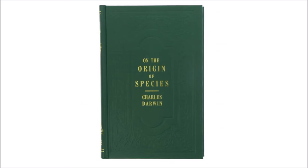See how different the leaves of the cabbage are, and how extremely alike the flowers; how unlike the flowers of the heartsease are, and how alike the leaves; how much the fruit of the different kinds of gooseberries differ in size, color, shape, and hairiness, and yet the flowers present very slight differences. It is not that the varieties which differ largely in some one point do not differ at all in other points — this is hardly ever, perhaps never, the case. The laws of correlation of growth, the importance of which should never be overlooked, will ensure some differences; but, as a general rule, I cannot doubt that the continued selection of slight variations, either in the leaves, the flowers, or the fruit, will produce races differing from each other chiefly in these characters. It may be objected that the principle of selection has been reduced to methodical practice for scarcely more than three-quarters of a century; it has certainly been more attended to of late years, and many treatises have been published on the subject, and the result has been, in a corresponding degree, rapid and important. But it is very far from true that the principle is a modern discovery.